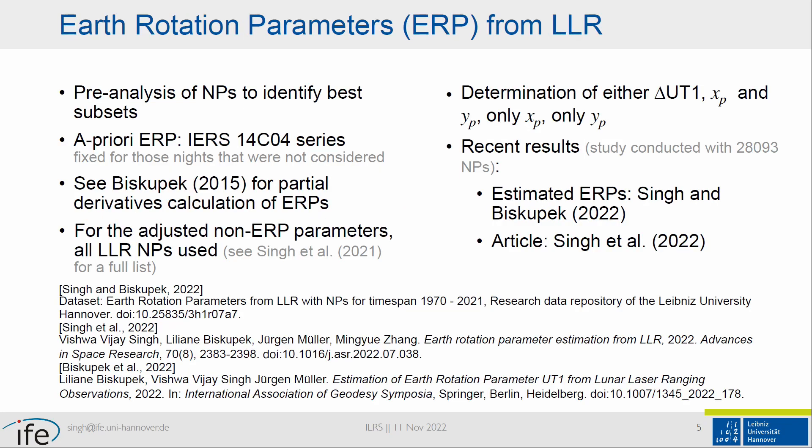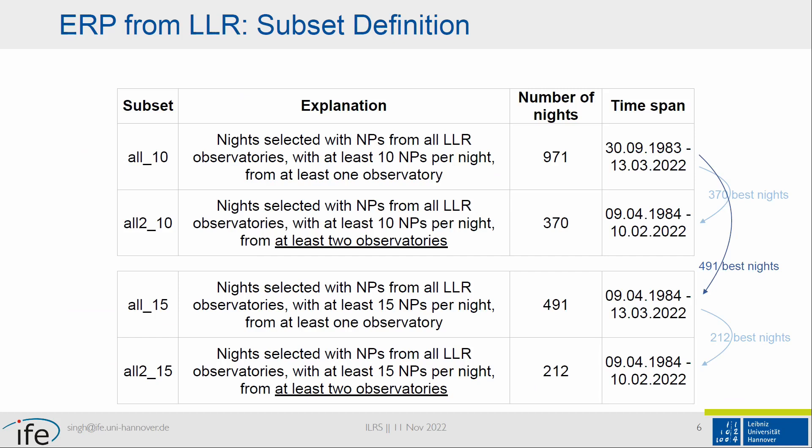I'm discussing this in the context of Earth rotation parameters. We create subsets of normal points per night. On any one night, we could have anything between one normal point and up to 50 or 60 on the best possible nights. We select nights on which a particular minimum number of normal points were achieved. For the first subset, the minimum number of points is 10, observed from at least one observatory. A stricter criterion requires the same minimum of 10 normal points observed from at least two observatories. Similarly with 15 normal points as the minimum.